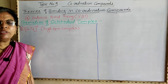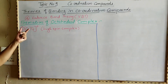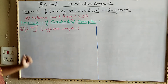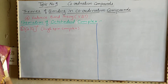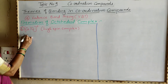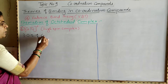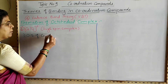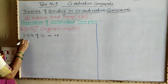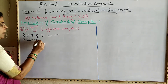Now we are going to see the second example, that is formation of octahedral complex. The second example is CoF₆³⁻, which is a high spin complex. In the first step, the oxidation state of Co in this complex is +3.